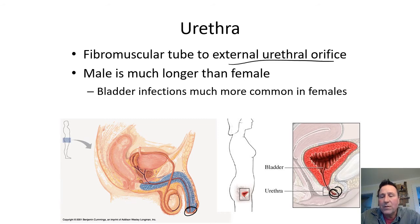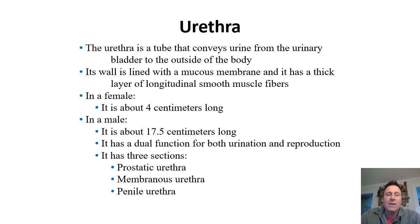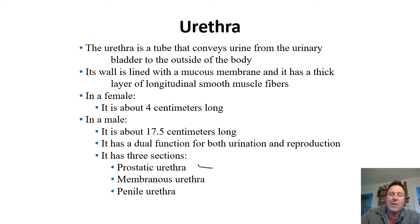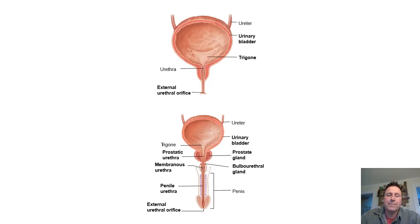In women, the urethra is a small hole just above the vaginal opening. In men, it's at the end of the penis. To reiterate, women have a much shorter distance from the outside world to the inside than males do. In males, we talk about the part going through the prostate as the prostatic urethra, then a little piece called the membranous urethra, and then the penile or spongy urethra to the end. So in males we have three different areas, and in females it's just the urethra.